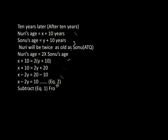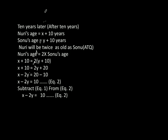Now subtract equation 1 from equation 2. Equation 2: x minus 2y equals 10. Equation 1: x minus 3y equals minus 10. Subtracting, the signs are changed: minus x and plus x cancel out. Plus 3y minus 2y gives y. Plus 10 and plus 10 gives 20. So y equals 20.